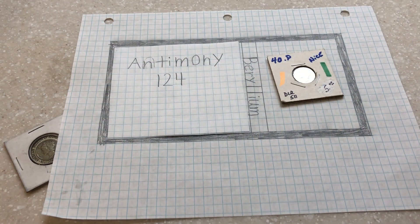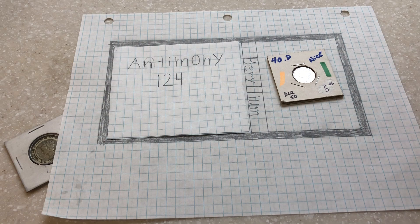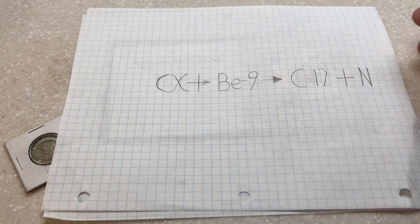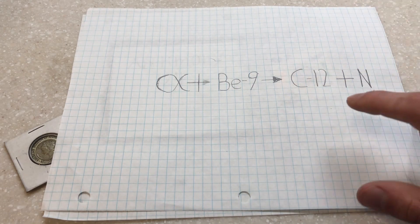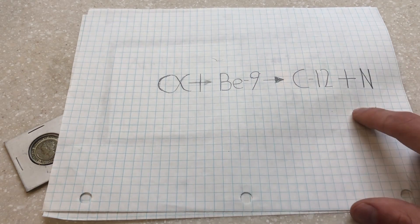The antimony outputs an alpha particle. This alpha particle would interact with the beryllium-9, causing it to change into carbon-12 and have a neutron output.